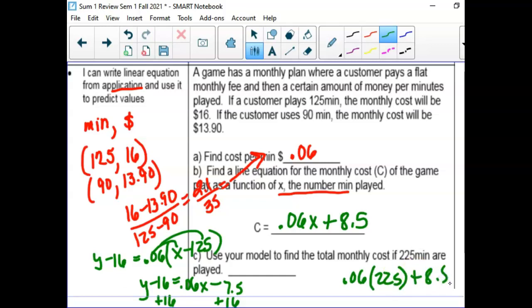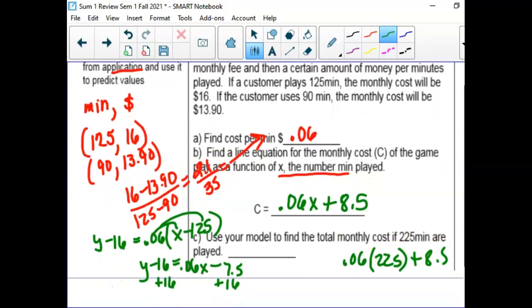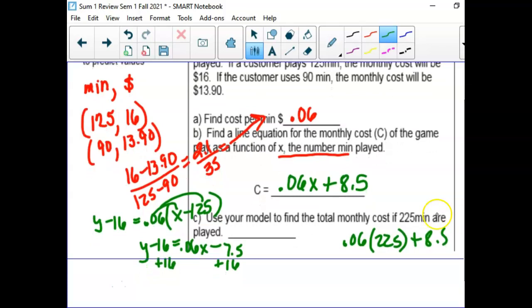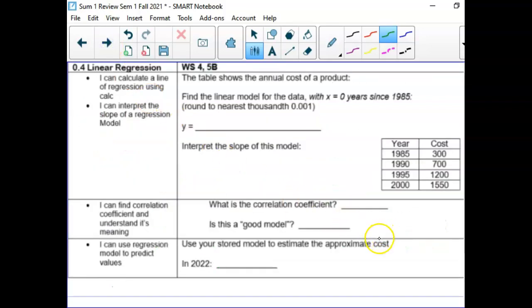And then it says to make an equation. So, I would suggest you start with one of these points, like the first one, y minus 16, equals 0.06x minus 125. And then if I distribute this, 0.06 times 125 is 7.5. And then if I add 16 over there to a negative 7.5, I get 8.5. Anybody have that answer already? And then 225 minutes, you would just type. Now we need to pull out our graphing calculator.